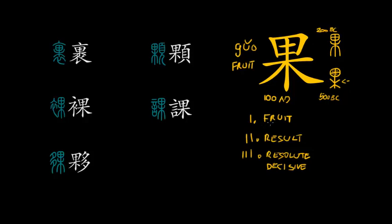The first meaning group — fruit — traces directly back to the original meaning. In modern Mandarin we say 水果 (shuǐguǒ) for fruit. The second meaning group — result — in modern Chinese is 结果 (jiéguǒ), which can be traced back to fruit somehow, because the fruit of your action is basically the result. Result and fruit can be linked together to the original meaning.